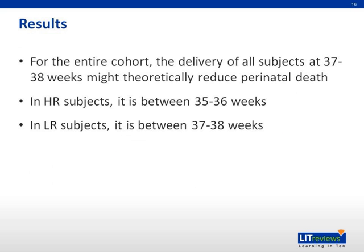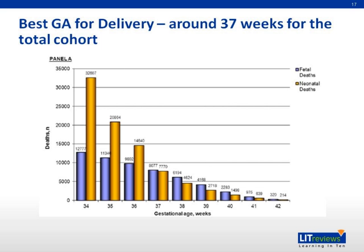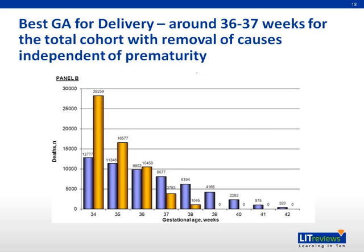The results are summarized on screen. Using the calculated rates, the authors estimated the numbers of neonatal deaths that could occur at each gestational age and plotted them alongside fetal deaths that actually occurred at and after that gestational age. The numbers are about equal at 37 weeks, consistent with previous results. Since there were still neonatal deaths at and after term, the authors deemed there were causes of neonatal death independent of prematurity. This number was deducted from all neonatal death figures, and when plotted with fetal death numbers, the best gestational age at which both death rates are equal is 36 weeks.